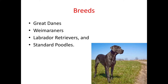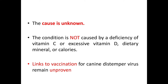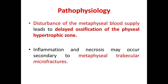The breeds commonly affected are large and giant breeds like Great Danes, Weimaraners, Labrador Retrievers, and Standard Poodles. The cause of the disease is actually unknown, and the condition is not caused by a deficiency of vitamin C, excessive vitamin D, dietary minerals, or calories. Links to vaccination for canine distemper virus still remain unproven.